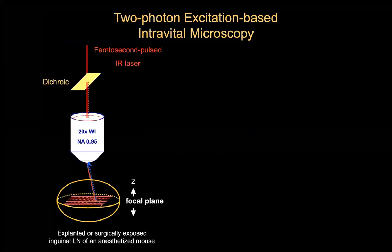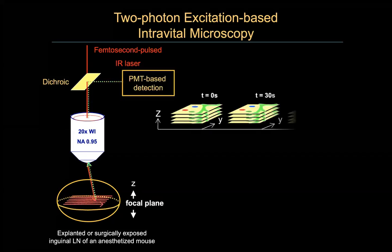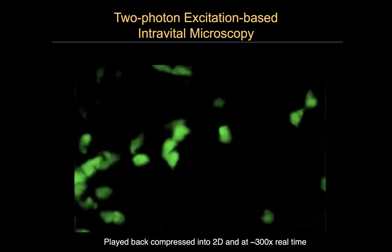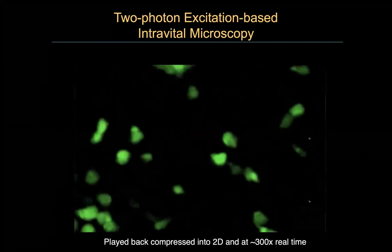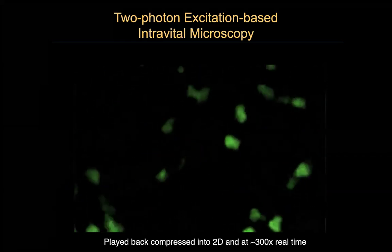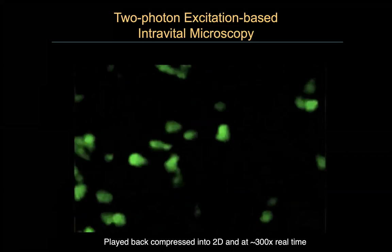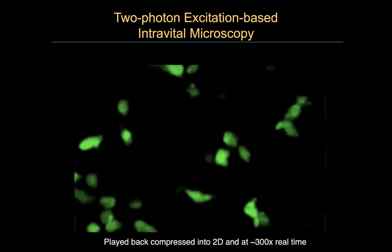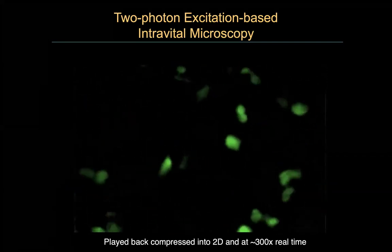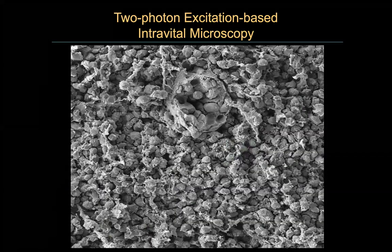Assuming everything's done right, you scan in the XY dimension, focus up and down, collect the stack of imaging data, repeat that over time, and play it back 200 to 300 times real speed, compressed in the Z dimension. And you see things like this — naive T cells moving in the paracortical region of a lymph node. The impression you get is that these green cells are moving in an empty space, but that's the environment they're actually in. You should never believe what an imager tells you based on what he or she does not see. Always worry about what's in the black — things we don't make fluorescent and don't see that are impacting the behavior of the cells we're tracking.